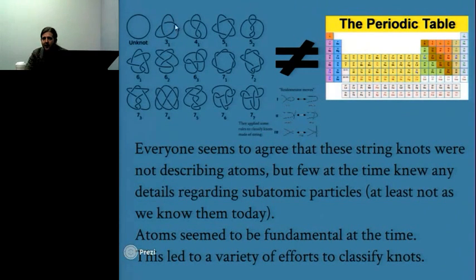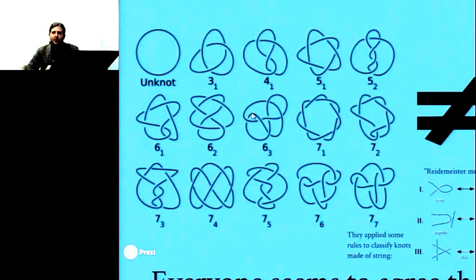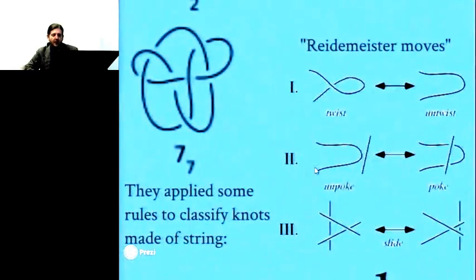The trefoil knot here, they call 3 sub 1. And it should be noted that there's also a mirror version of this. If you exchange the sign of all these crossings, you get a left-handed version of this. 4-1 here is the figure eight knot. And so this has four crossings rather than three. It is its own mirror image. So Riedemeister 1 is here and that's really I think the most important one to pay attention to in the future context of what we'll be talking about.